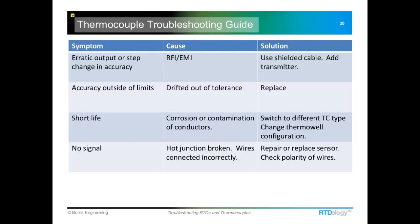One of the drawbacks to thermocouples is that they do drift fairly quickly, especially at higher temperatures. If you're running 1,000–1,500°F, they can drift pretty quickly. You may want to put them on a replacement schedule every six months or a year. There's really no fix — it's just the normal degrading of the thermocouple wire. It can pick up contaminants at higher temperatures, and there's sometimes corrosion that can happen within the sheath.